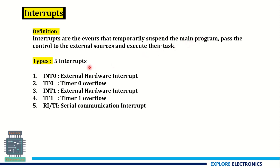There are five different types of interrupts that can occur in the AT51 microcontroller: two external hardware interrupts, two timer interrupts, and one serial communication interrupt. The two external hardware interrupts are called INT0 and INT1, the timer overflow interrupts are called TF0 and TF1, and the serial communication interrupt occurs through RI or TI.